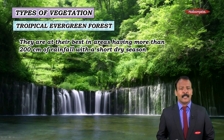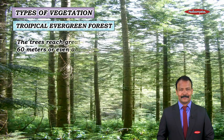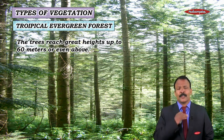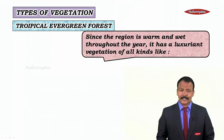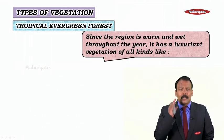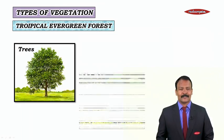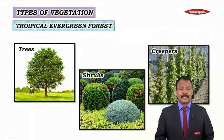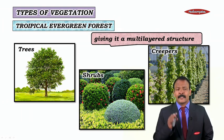They are at their best in areas having more than 200 cm of rainfall with a short dry season. The trees reach great heights, up to 60 meters or even above that. Since the region is warm and wet throughout the year, it has luxuriant vegetation of all kinds — trees, shrubs, and creepers — giving it a multi-layered structure.